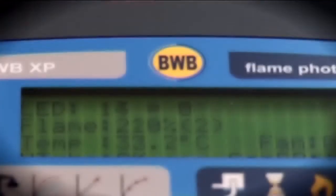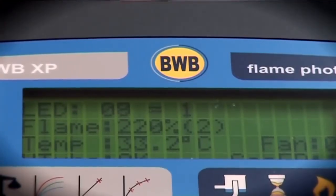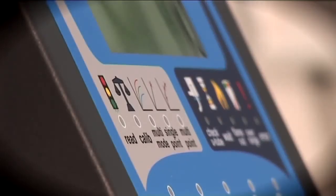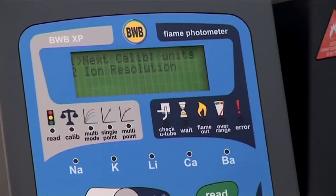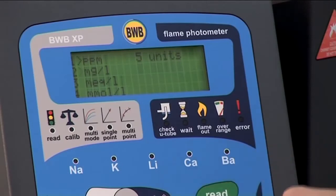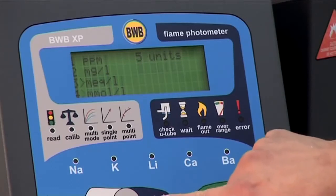Now that the BWB XP is set up and ready to go, the next step is to calibrate the instrument. Before we start our calibration, we can set the units in which we want to calibrate and display. The BWB XP can be set to parts per million, milligrams per liter, milliequivalents per liter, and millimoles per liter. For our example, we will choose parts per million.